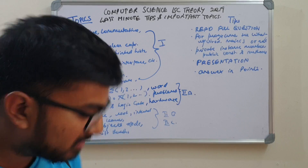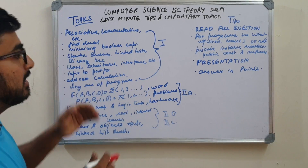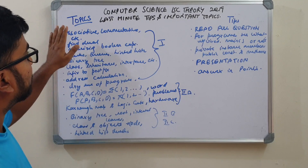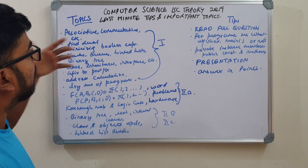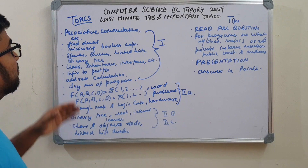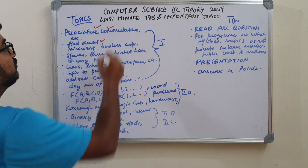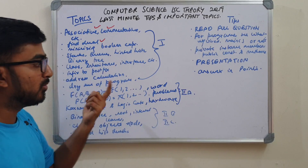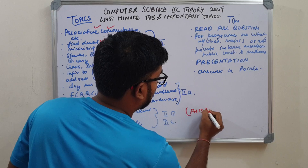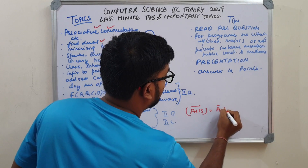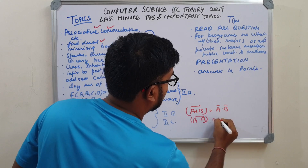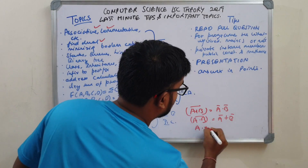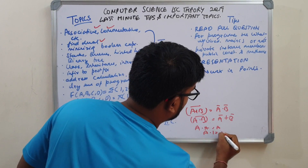Part one is usually about simple things: commutative laws, associative laws, etc. They will ask you what is commutative law, what is associative law. They will ask you to write a truth table, verify propositional logic, find a dual, and minimize a Boolean expression. For minimizing, you should use De Morgan's laws: A+B whole bar equals A-bar dot B-bar, and A dot B whole bar equals A-bar plus B-bar, and identity laws like A dot A equals A, A dot 1 equals A.